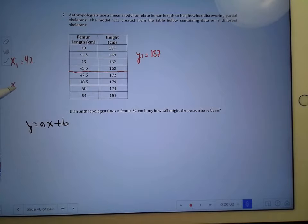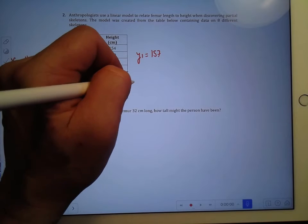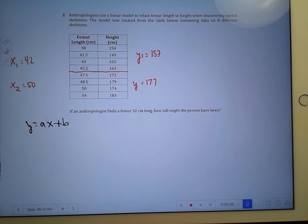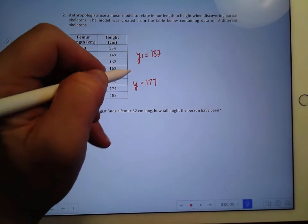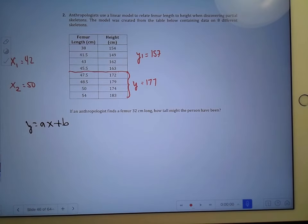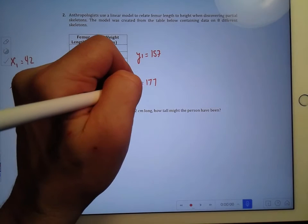Next up is the x2, or the second x, which will be based on the average of the bottom 4 x's over here. When you get the average of those, you're going to get a 50. And when you get the average of the y's over here, you're going to get a 177. So just a reminder, I just added those 4 up and divided by 4 to get those values, and that's my y2.